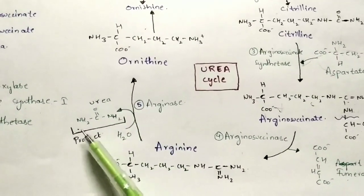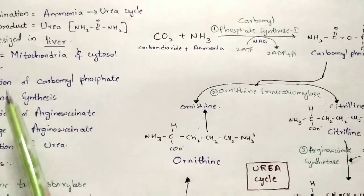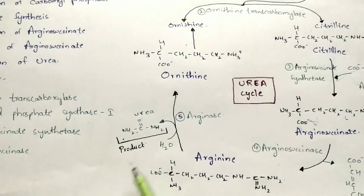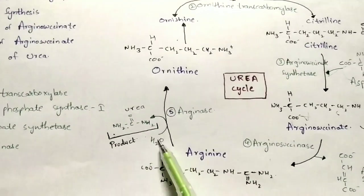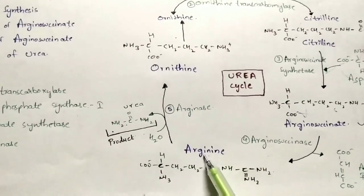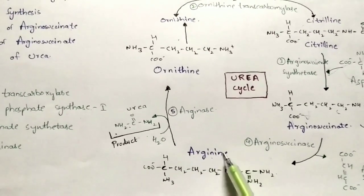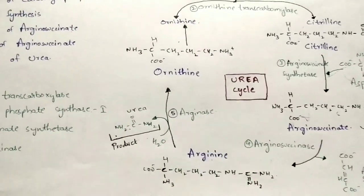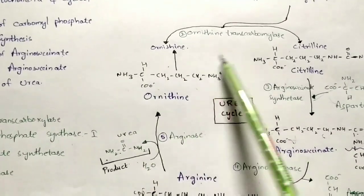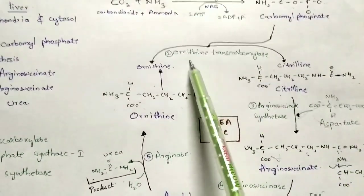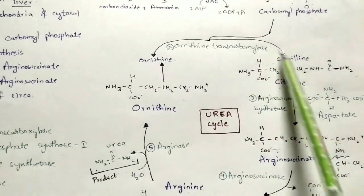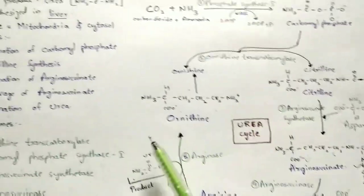In the fifth step, arginine forms ornithine by liberating urea as the end product — by the intake of a water molecule. This is the molecular structure of urea and of ornithine. Ornithine then forms citrulline again with the help of carbamyl phosphate, utilizing the enzyme ornithine transcarbamoylase, and the total cycle repeats.